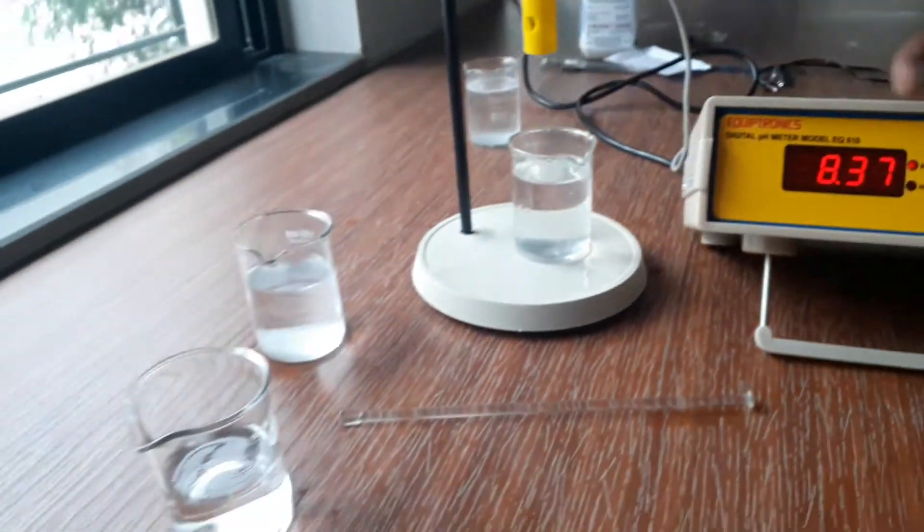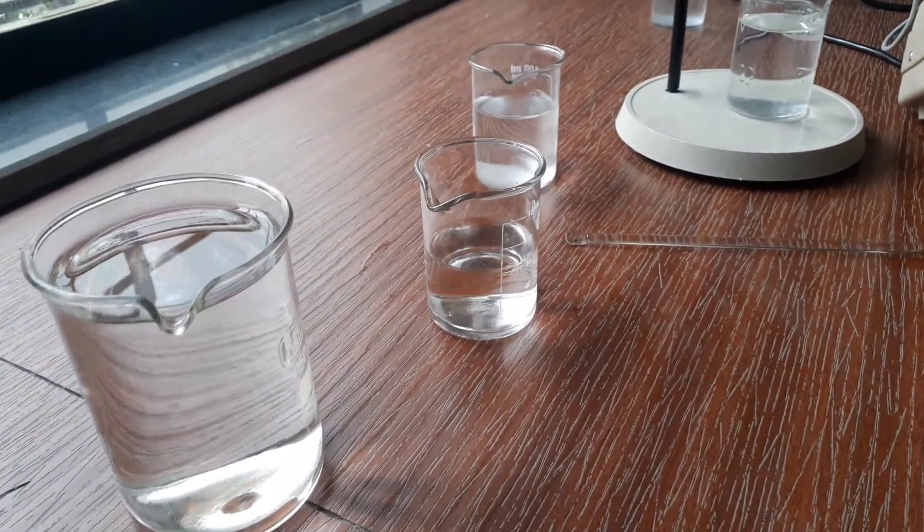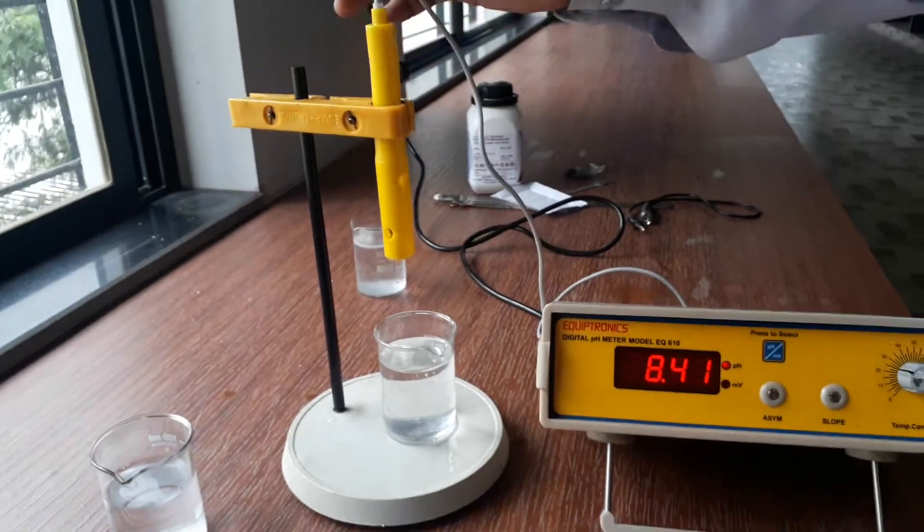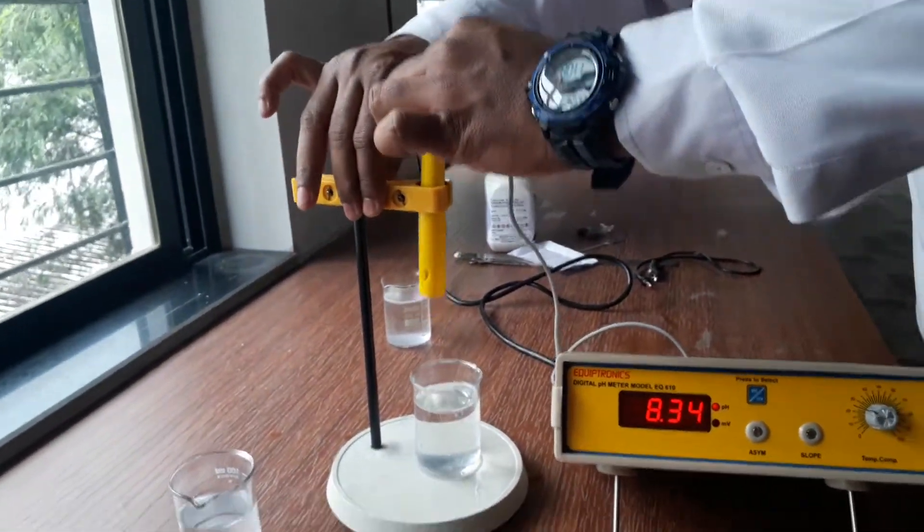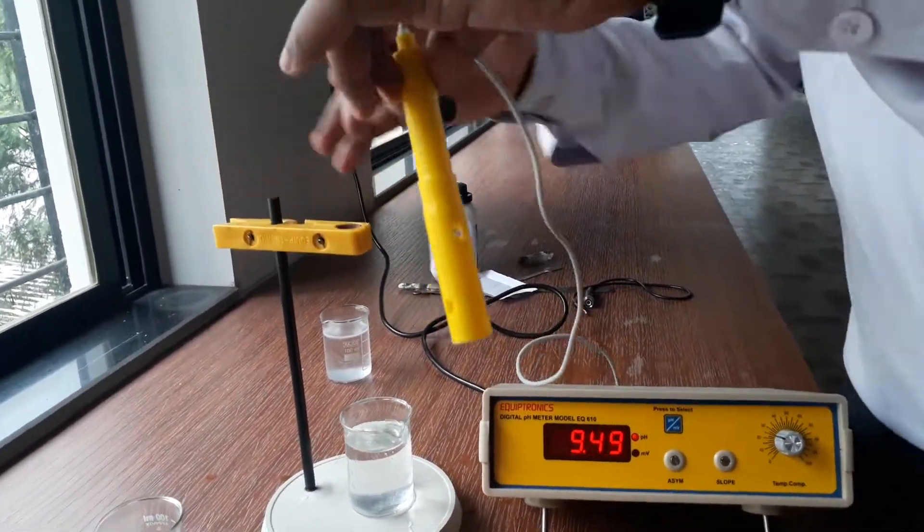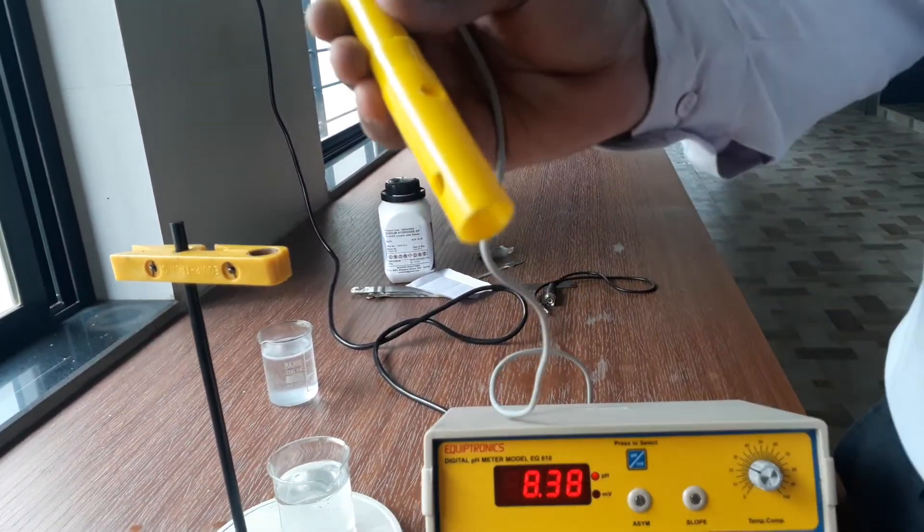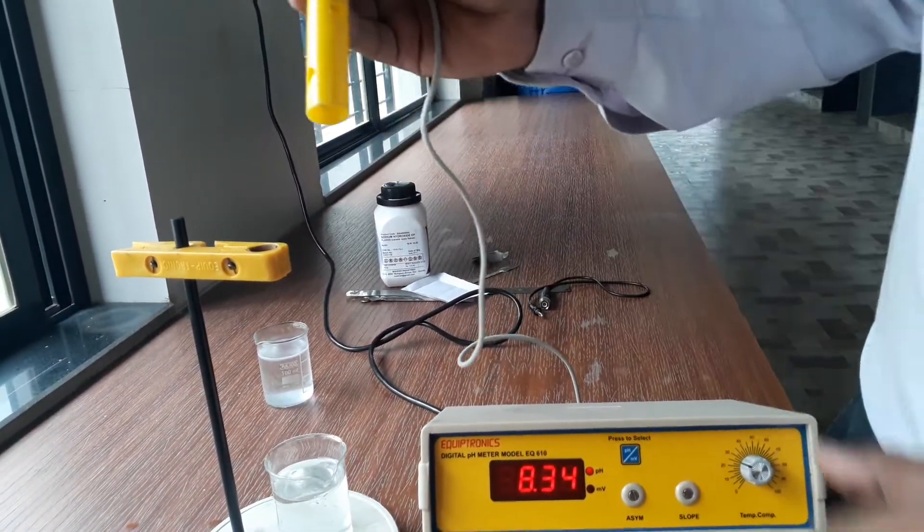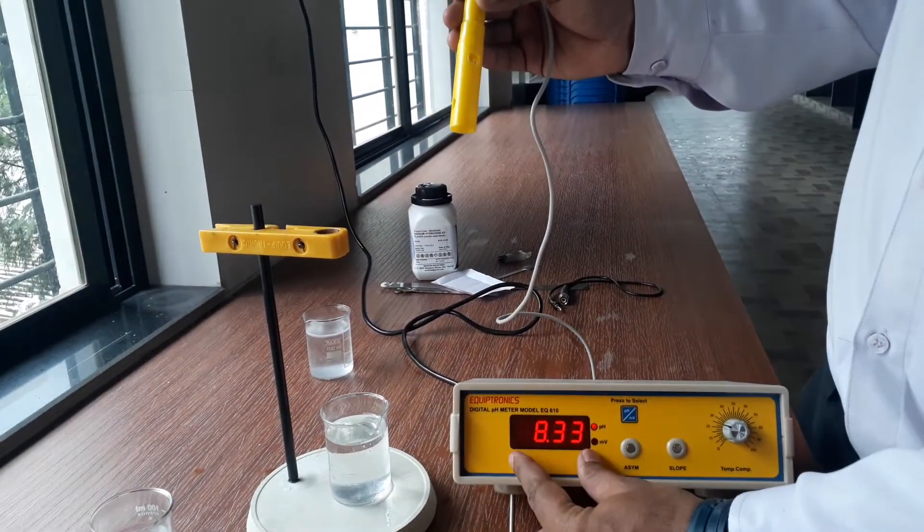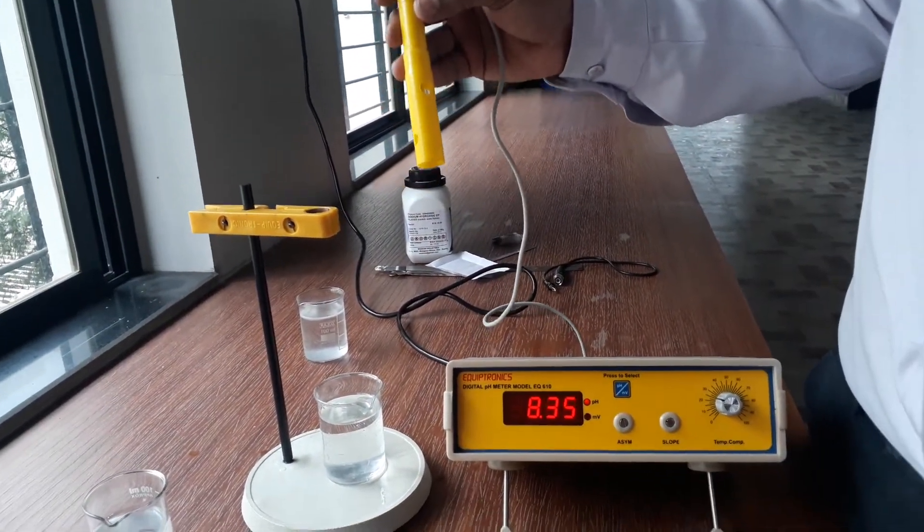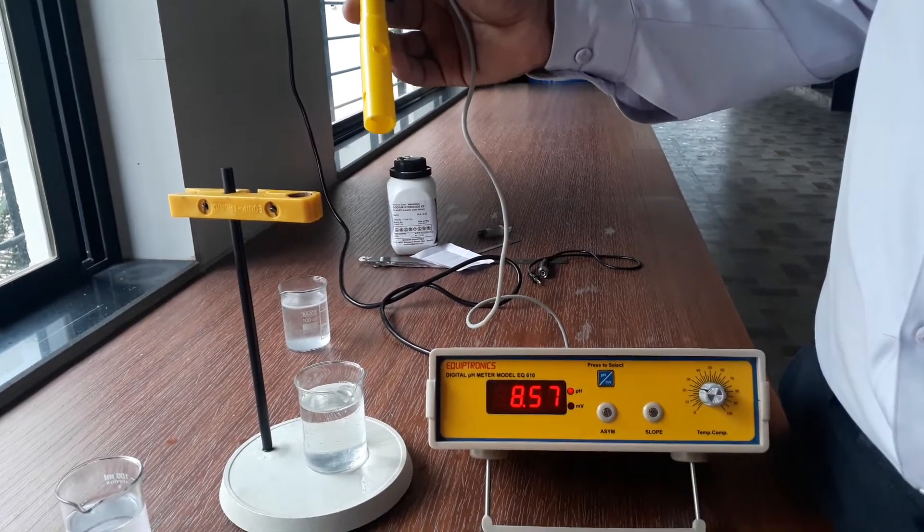We have three unknown solutions. By dipping our electrode, this is the pH meter electrode which is having some special substances in it. These are the sensors which sense the pH value of the solution. Due to this sensor, you are getting the reading on this display. So let us dip this pH electrode in the first solution.